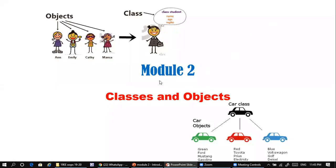Let us discuss classes and objects. Classes are general items and objects are specific or special items. Classes consist of data members and member functions, whereas objects are basically variables for a class — the variable creation is nothing but an object.